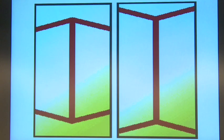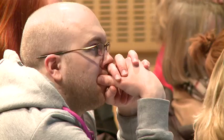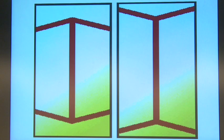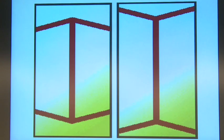Your a priori belief from experience that this is going into the distance and this is coming out at you makes you change the way you perceive those lines. Your prior knowledge changes quite fundamentally your perception of the length.